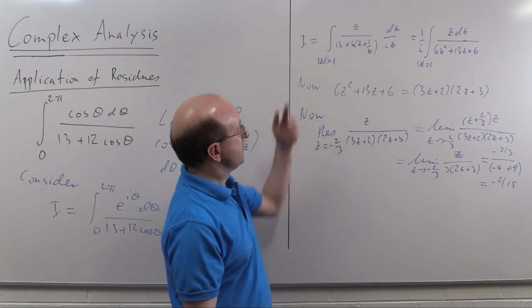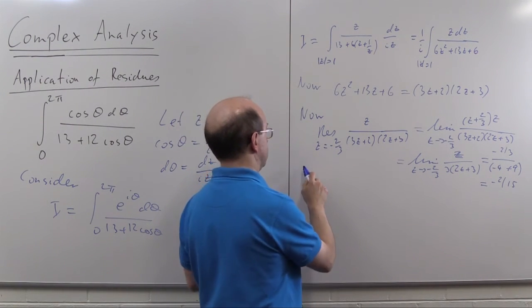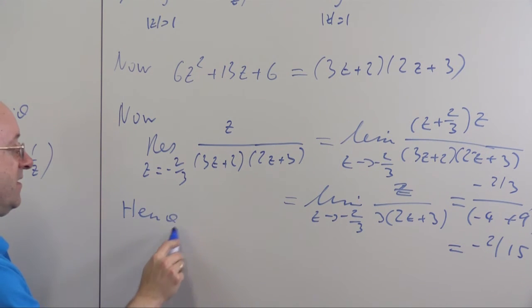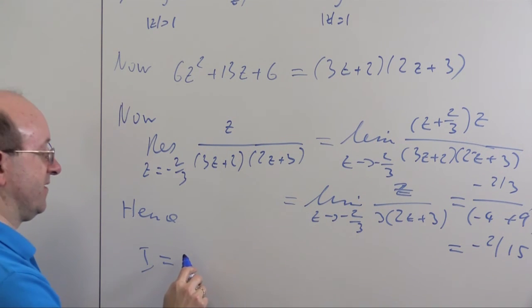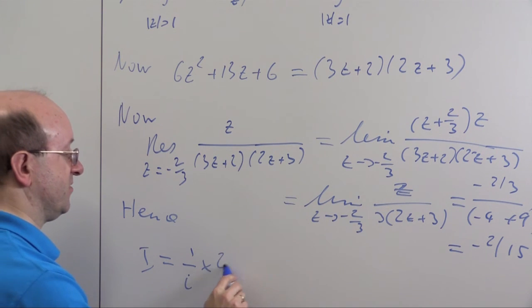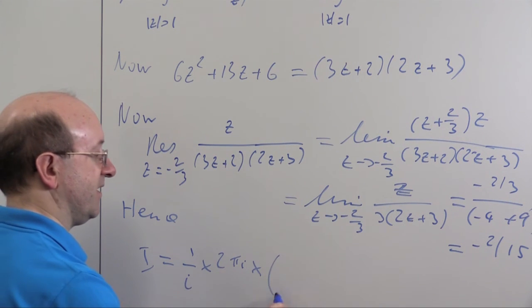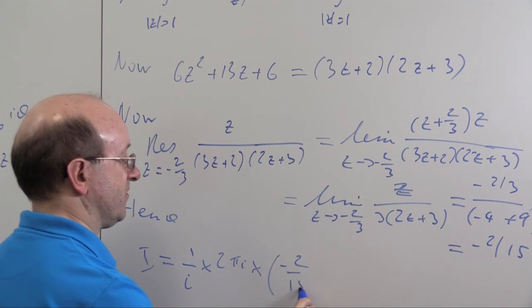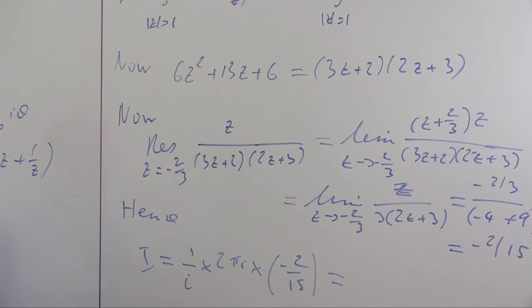So all I need to do to find my integral i is multiply by well I've got 1 over i factor times the 2 pi i from the residue theorem times the residue minus 2 over 15, that's going to be minus 4 pi on 15.